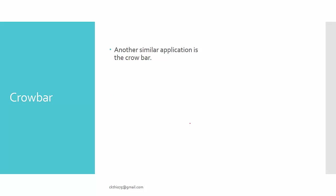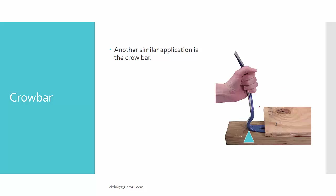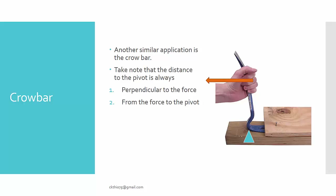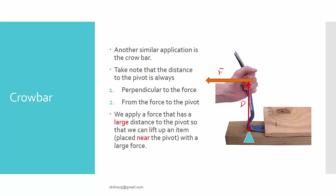This is the same principle as the crowbar. The pivot is positioned here, and you pull at the far end. Notice that the perpendicular distance is always perpendicular to the force, measured from the force to the pivot. We apply a force over a large distance so we can lift an item placed near the pivot with a large force. The force we want acts upward, and again the perpendicular distance is perpendicular to that force and measured to the pivot.